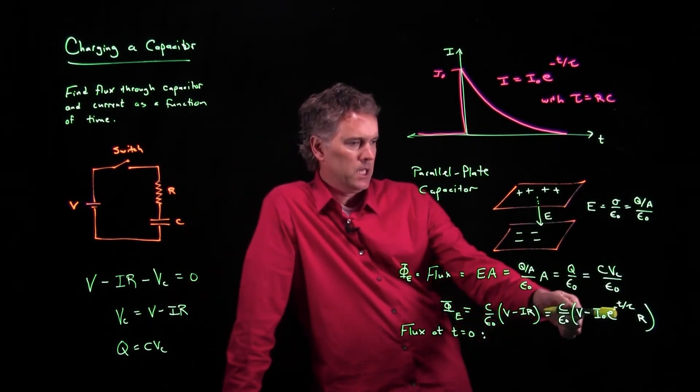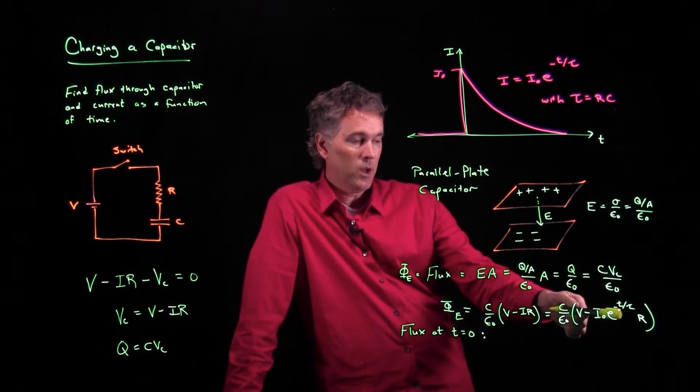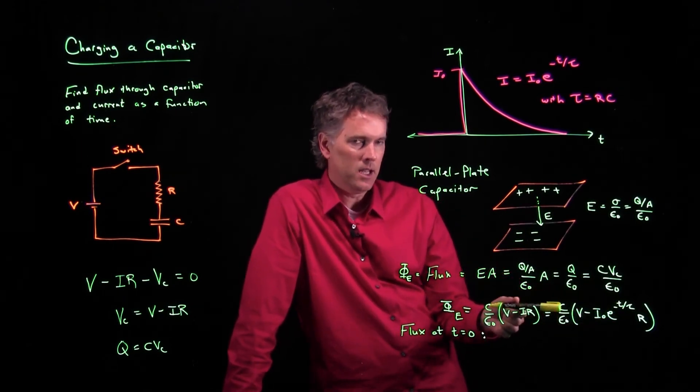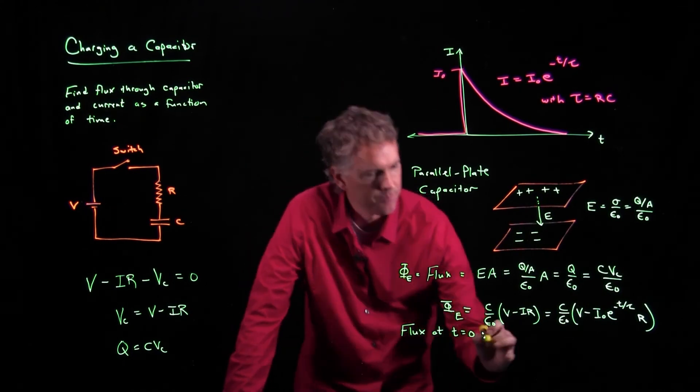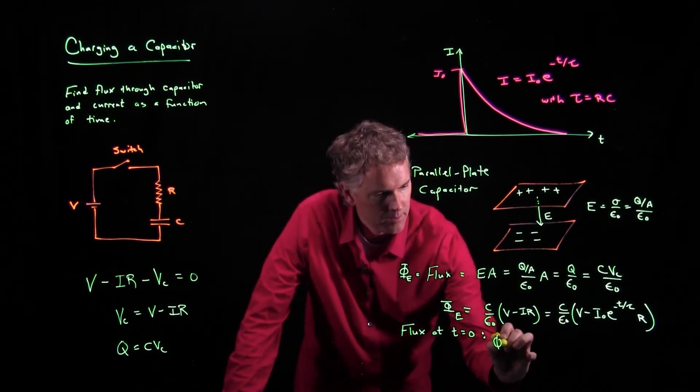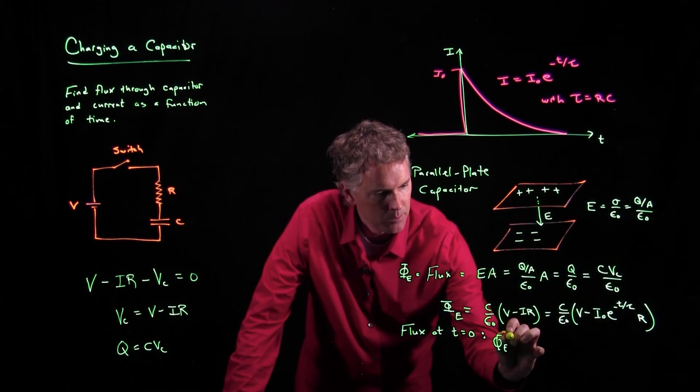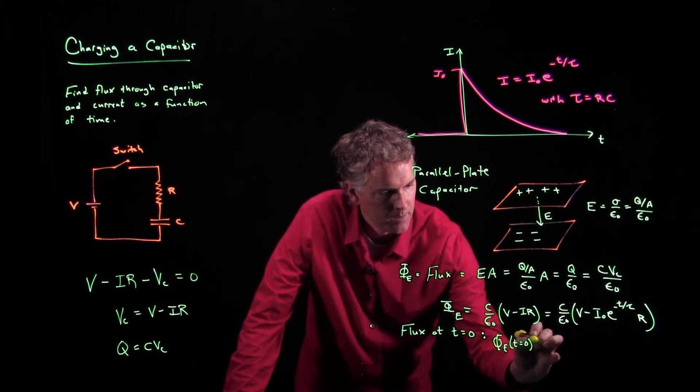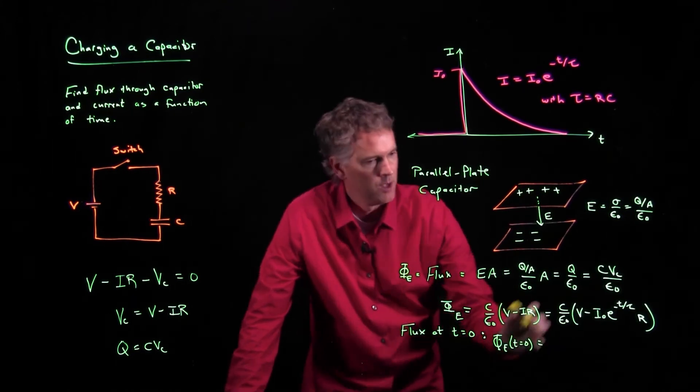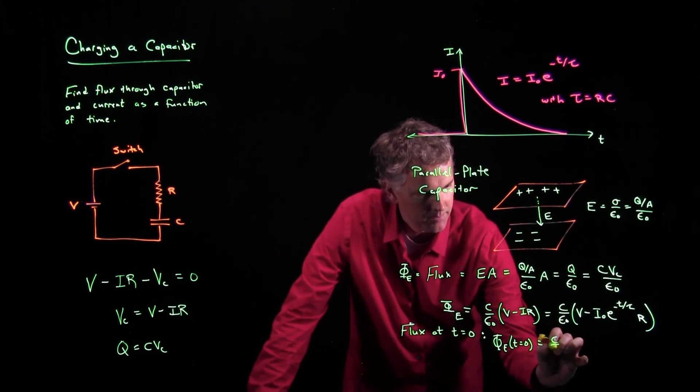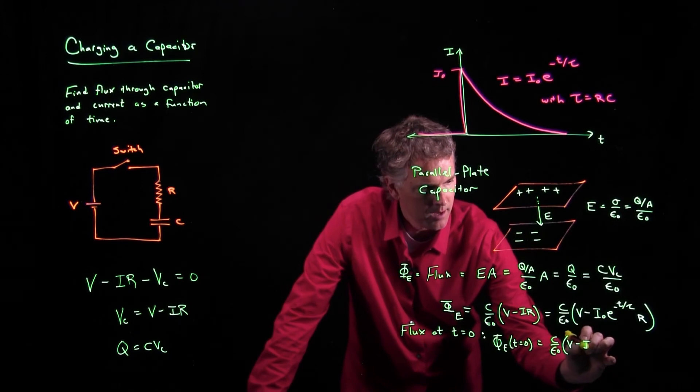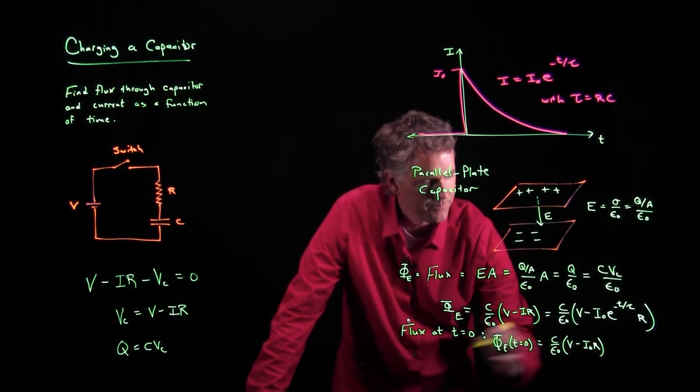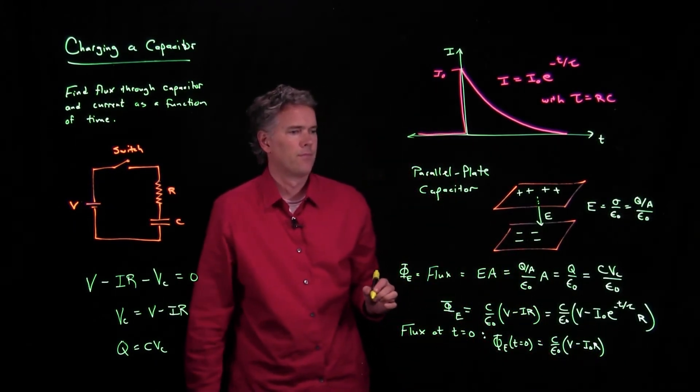We just plug in T equals zero to this equation. And if I plug in T equals zero, what is E to the zero? It is one. And so I just get the flux at T equals zero. It is equal to C over epsilon naught times V minus I naught R.